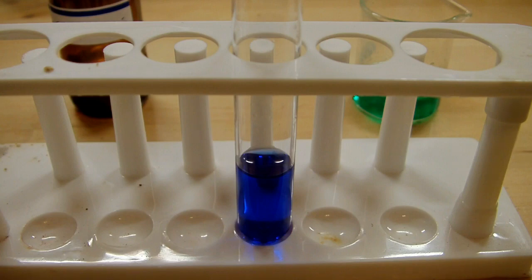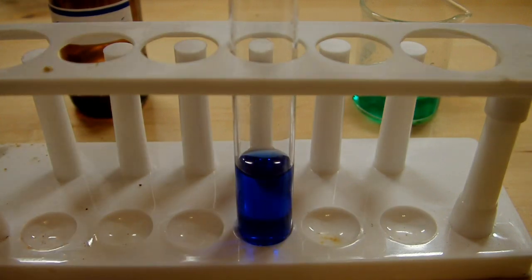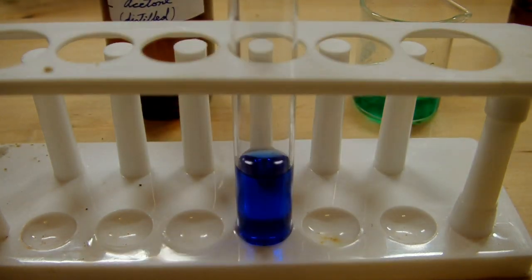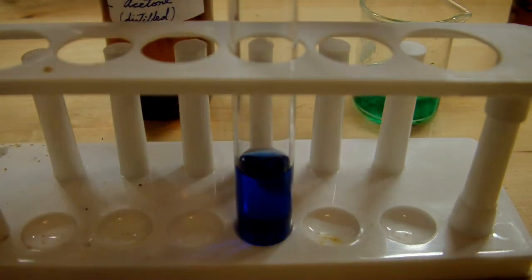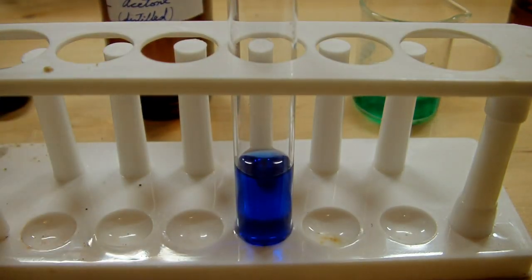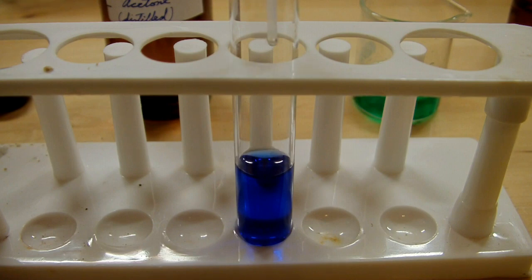So now we've got this really beautiful blue color of the hexaamine complex in solution. And now what we want to do is take it out of solution. That's where the acetone comes in. We're going to add the acetone, and what that's going to do is reduce the polar nature of the solution. Acetone is much less polar than water is. So once we add that, it should push the complex out of solution, and we'll get yet another nice color change.